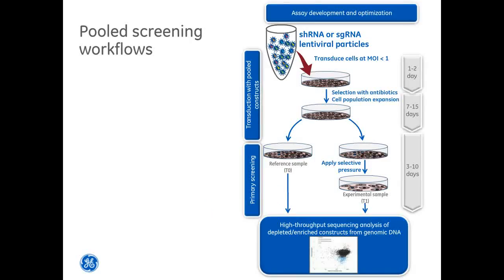Here's an overview of the pooled screening workflows for shRNAs and sgRNAs. In both types of screens, a pool of lentiviral constructs is transduced into cells at a low multiplicity of infection, or MOI, such that a single cell receives a single shRNA or sgRNA construct. The cell population is then antibiotic-selected and expanded. A reference sample, or T0 sample, is taken, and then selective pressure is applied to the experimental T1 sample. High-throughput next-generation sequencing of the genomic DNA from the T0 and T1 samples is then performed to determine which shRNAs or sgRNAs have been depleted or enriched.